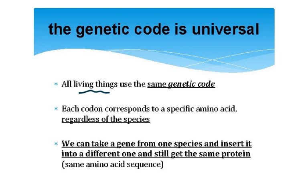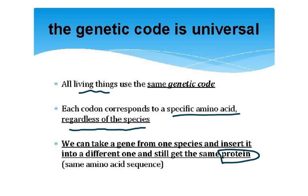All living things, whether it's a tree, a lizard, or a human being, all use the same genetic code. Each codon corresponds to a specific amino acid regardless of the species. We can take a gene from one species and insert it into a different one and still get the same protein. For instance, you take the gene for insulin and put it in a bacterium, and the bacterium starts to make insulin.